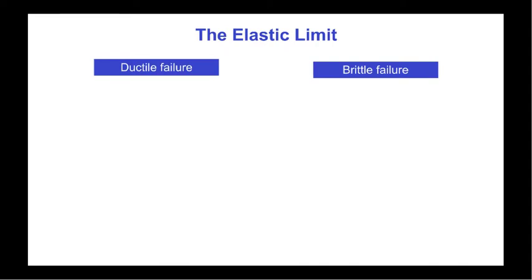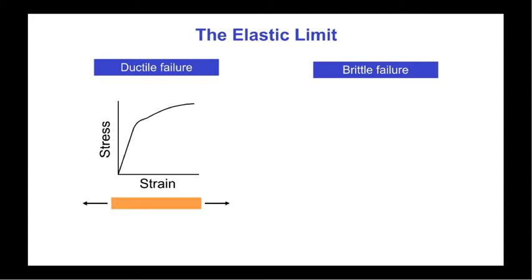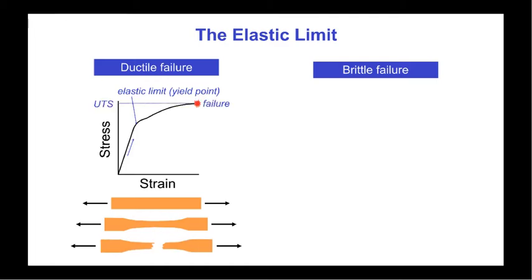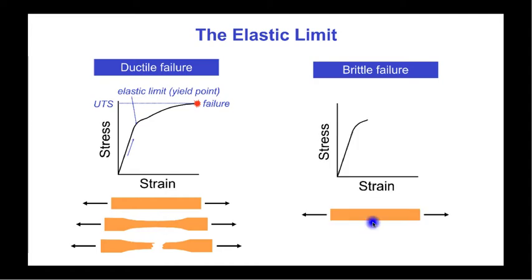There is an upper limit to the load at which real materials will behave as elastic solids. In a ductile material, as strain increases and exceeds the elastic limit or yield point, the material will start to deform plastically and eventually fail. The stress at which catastrophic failure occurs is called the ultimate tensile stress. The plastic deformations that occur between the elastic limit and the failure point are irreversible — they are not elastic. In a brittle material, the difference between the elastic limit load and the ultimate tensile load is very low, so brittle materials fail very soon after the elastic limit is achieved.